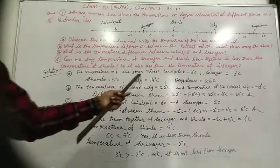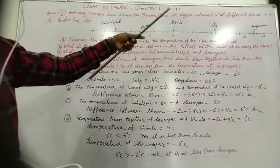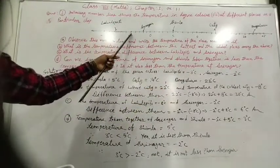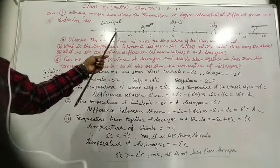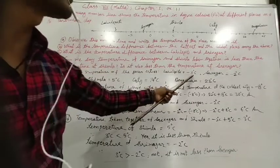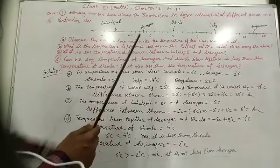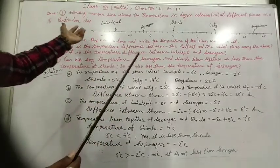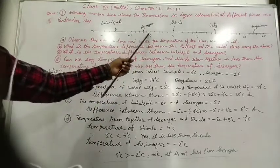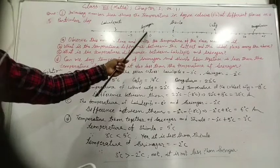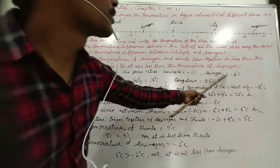The temperature of the given cities — Lahul-Spiti: counting left from 0, minus 5, minus 6, minus 7, minus 8. Temperature of Lahul-Spiti is minus 8 degrees centigrade. Now, temperature of Srinagar. Left-hand side from 0, all values will be negative. Counting: minus 1, minus 2. The temperature of Srinagar is minus 2 degrees centigrade.